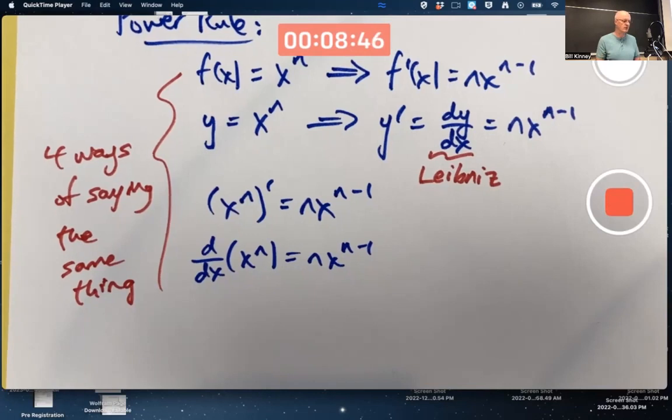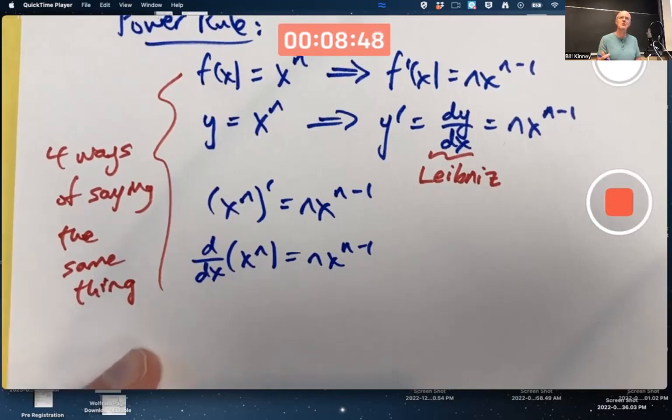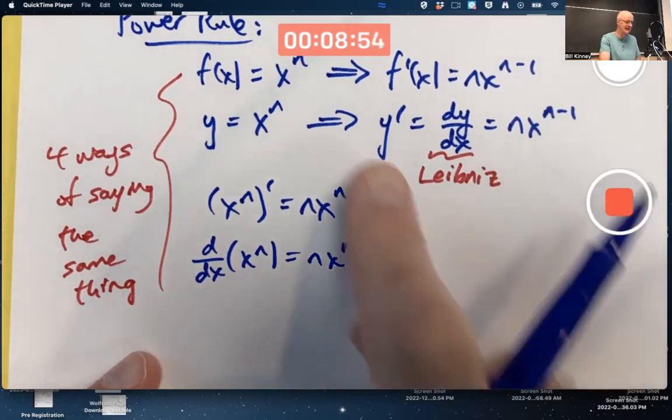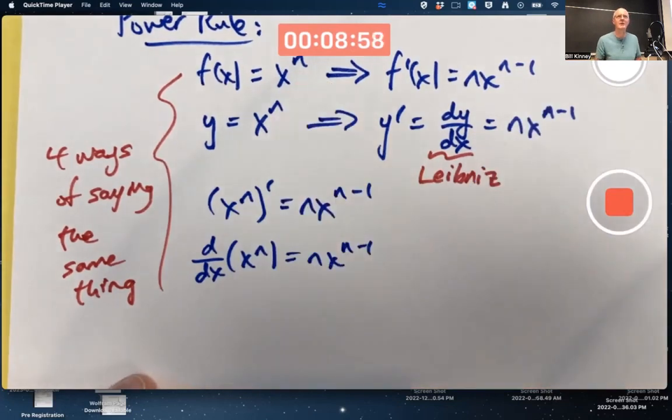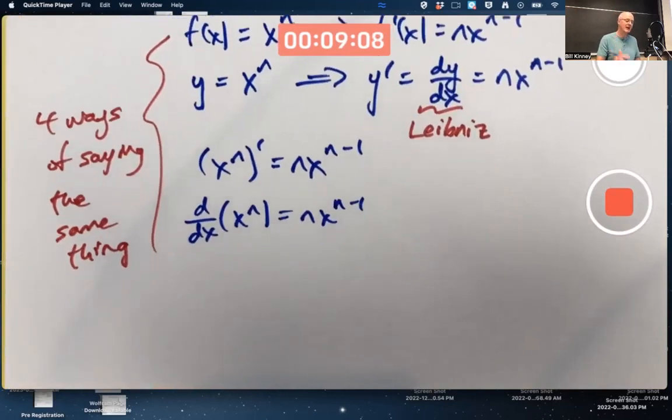We have verified so far the power rule in the case where n is 2, 3, negative 1, and also 1/2. This works for any value of n. I emphasize even an irrational number like π, though it does beg a question, why would you ever want to raise a number to the π power? Not really any applications that I know of, but it's still true.